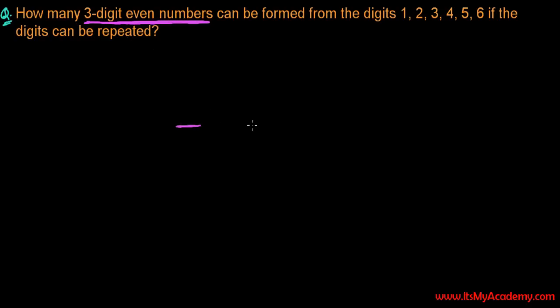To form a 3-digit even number, there are three spaces to be filled. The total numbers available are 1, 2, 3, 4, 5, and 6. From these six digits we have to make 3-digit even numbers.